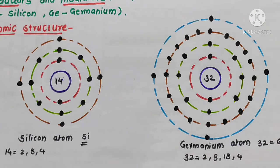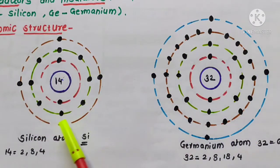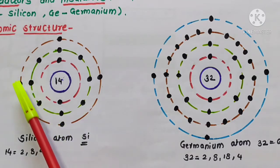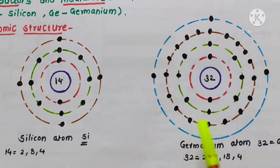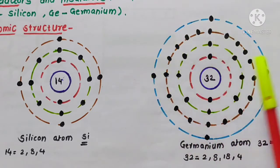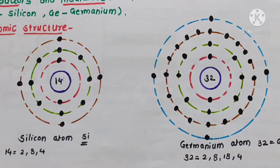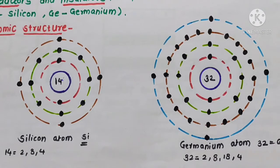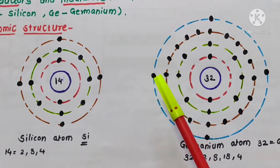If you observe carefully, in silicon and germanium, the outermost orbit has 4 valence electrons — 1, 2, 3, 4 in silicon and 1, 2, 3, 4 in germanium. So both these atoms have 4 valence electrons in the outermost orbit, and they are called tetravalent. Tetra means 4.